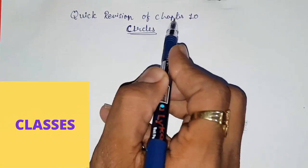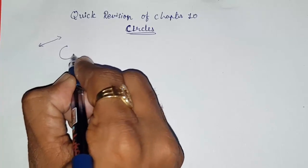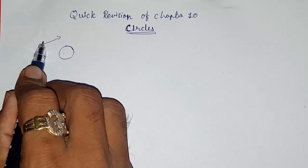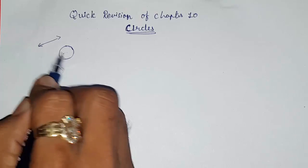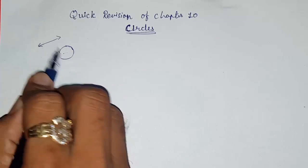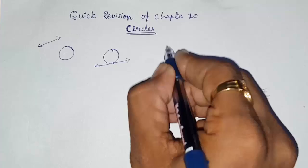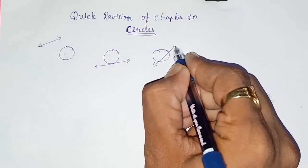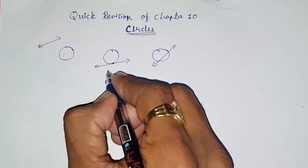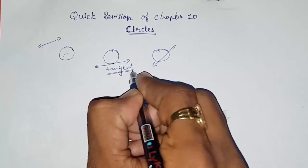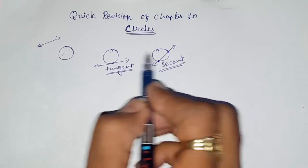Hello friends, today we are going to do a quick revision of Chapter 10: Circles. From the basics, there can be three relationships between a line and a circle: they will intersect at one point, they will intersect at two points, or they will not intersect. When a line intersects at one point, it is called a tangent; when it intersects at two points, it is called a secant.